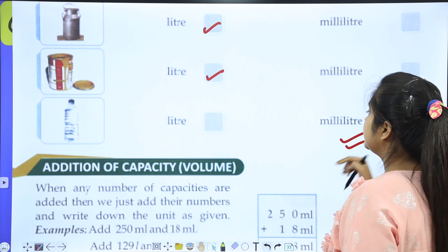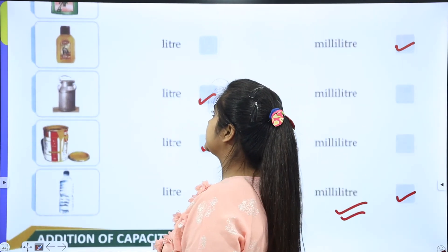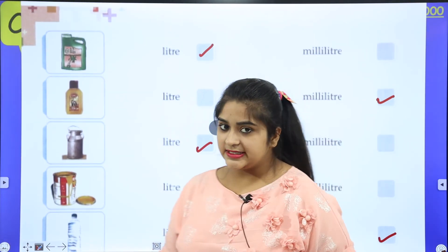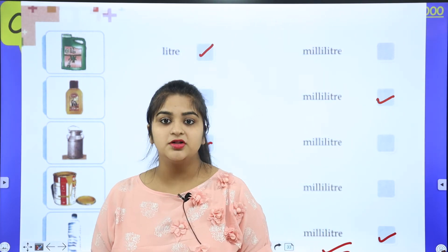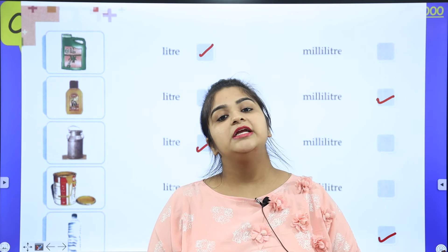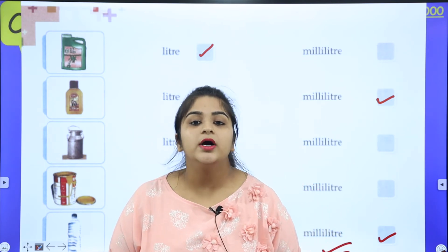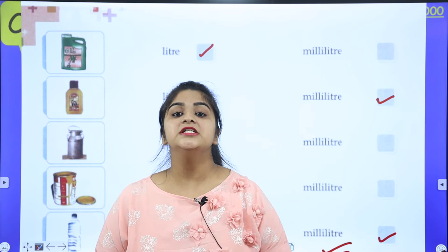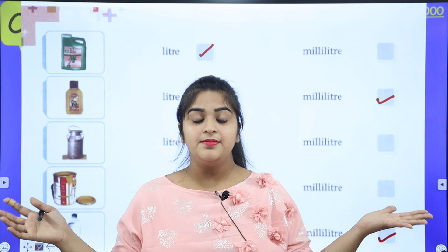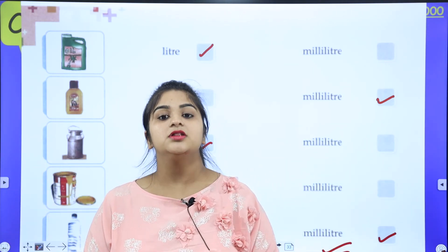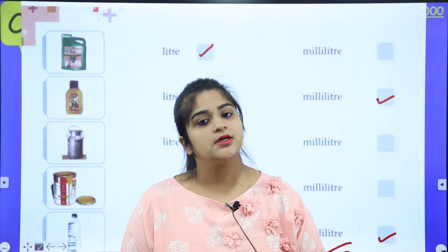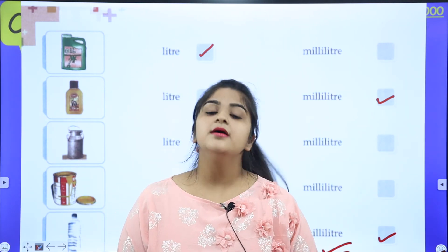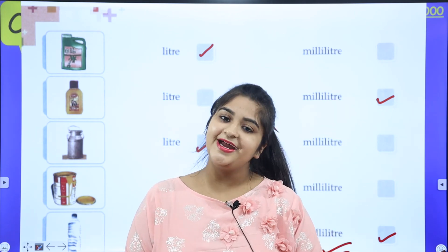Now we have learned so much. We will do addition of capacity and volume in the next class. So what did you learn today? What are milliliters and liters, and that 1 liter equals 1000 milliliters. Liters are used when we measure more capacity, and milliliters when we measure small quantity. See you in the next class. Bye bye, thank you.